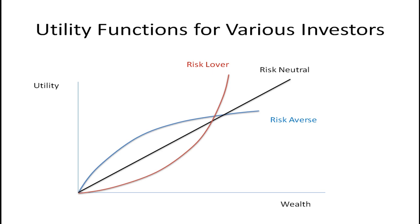In a previous video, I discussed the utility functions for different risk preferences of investors, and I want to continue that discussion here. This graph plots the utility function based on the amount of wealth that someone has, and you can see that the shape of the utility function depends on their risk preference. The risk-averse individual has a concave function, and it exhibits diminishing marginal utility of wealth.